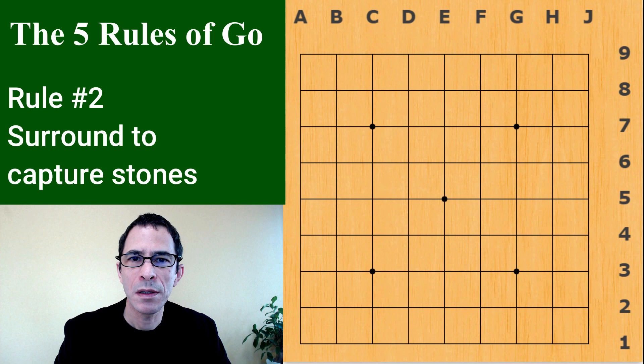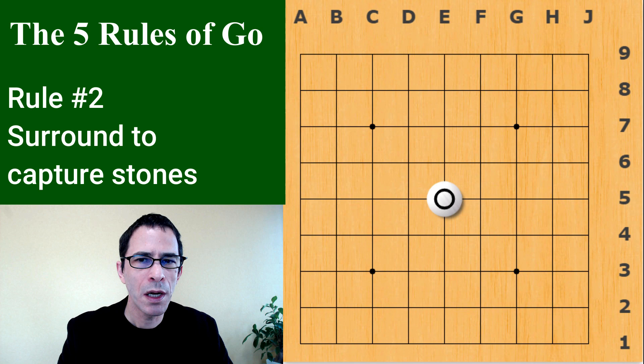Rule number two is that if you surround an opponent's stone you can capture it. I'm going to start with a white stone in the center of the board and give black a few moves so that black can capture it. To surround a stone, you surround it from horizontal and vertical points.